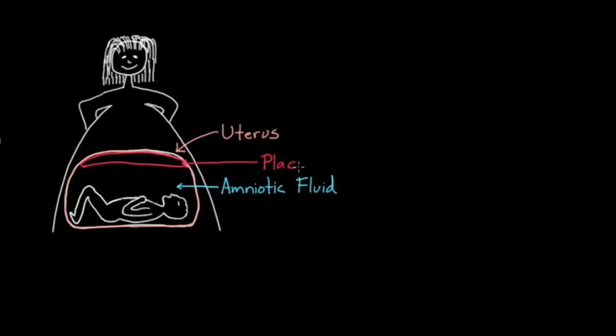The placenta. And you may have heard of the placenta. And the baby actually sends a couple of vessels up to the placenta. And these are little umbilical arteries. And also sends up an umbilical vein to the placenta. And the vein brings blood back from the placenta.